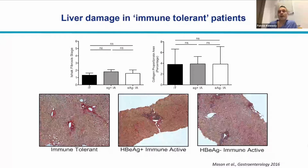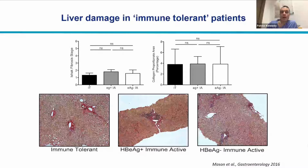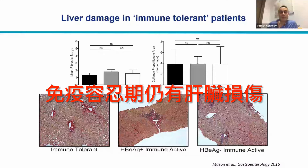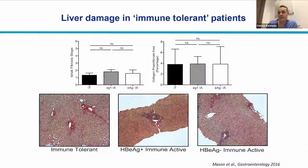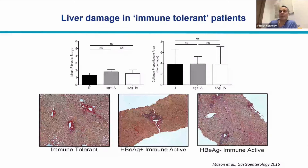In a study published in Gastroenterology of patients all below age 30 — irrespective of disease phase (e-antigen positive immune active, immune tolerant, or e-antigen negative immune active) — biopsies almost always yielded the same results: a fibrosis stage of 1 out of 6 on the Ishak scale. There was also very little difference in collagen proportionate area, suggesting that patients labeled immune-tolerant were not in a state of immunological inertia but showed factors driving some degree of disease.